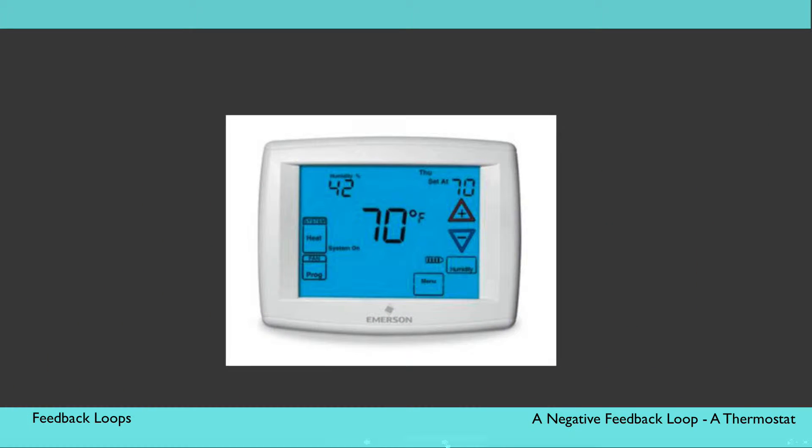A thermostat is an example of a second type of feedback loop, that is called negative feedback loop. It is also known as a balancing or inhibiting feedback loop, because an increase in one element triggers a decrease in the other, or vice versa.